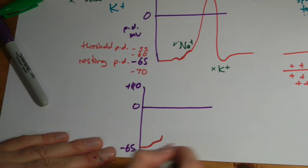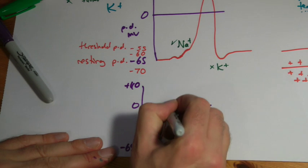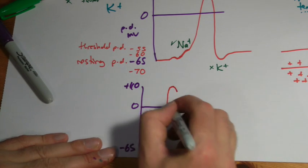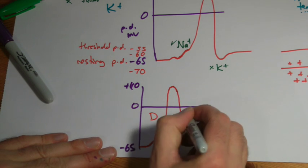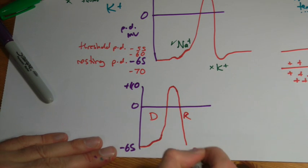So it's polarized at the moment, the resting potential. It depolarizes up to forty. So I'll just put a D for depolarize. As it comes back down again, that's called repolarizing. You get it to where it was.